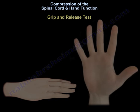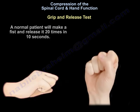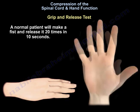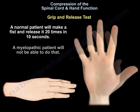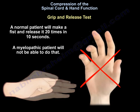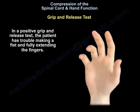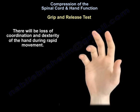For the grip and release test, a normal patient will make a fist and release 20 times in 10 seconds. A myelopathic patient will not be able to do that. In a positive grip and release test, the patient has trouble making a fist and fully extending the fingers, with loss of coordination and dexterity during rapid movement.